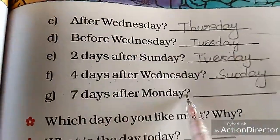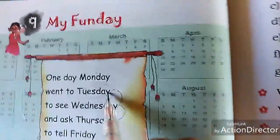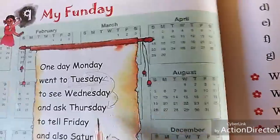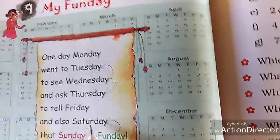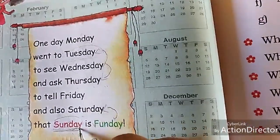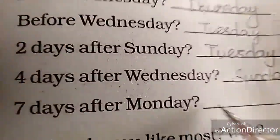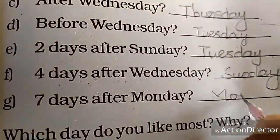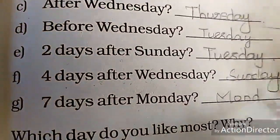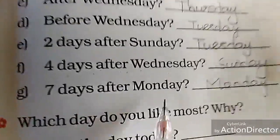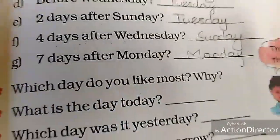Seven days after Monday — Monday after: Tuesday (one), Wednesday (two), Thursday (three), Friday (four), Saturday (five), Sunday (six), Monday (seven). Seven days after Monday is again Monday.